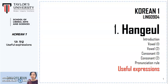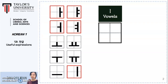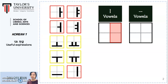In order to write a Korean syllable, we need to understand how to combine consonant and vowel. If the vowel includes a vertical vowel, the initial consonant will be written on the left side in the syllabic box and the vowel comes on the right side. If the vowel is horizontal, then the consonant goes to the upper part and the vowel is at the bottom.